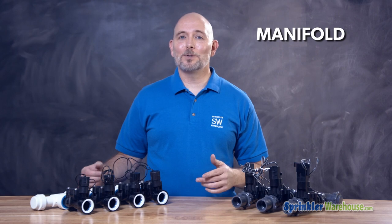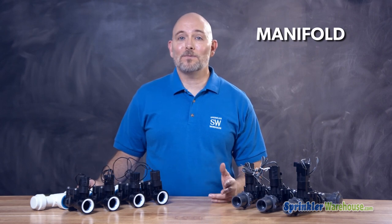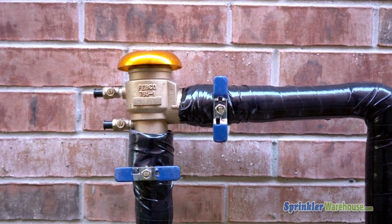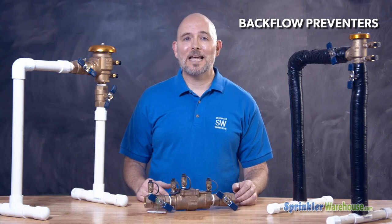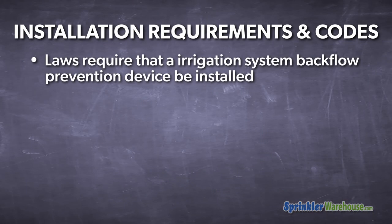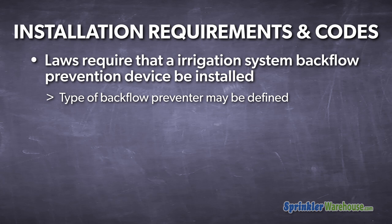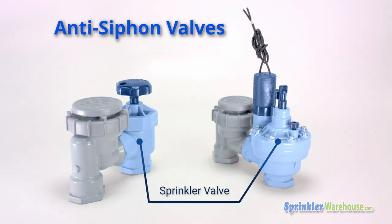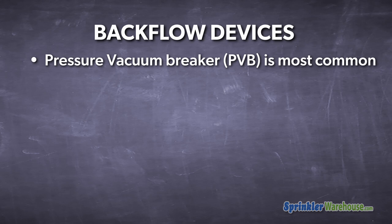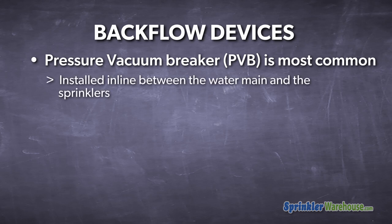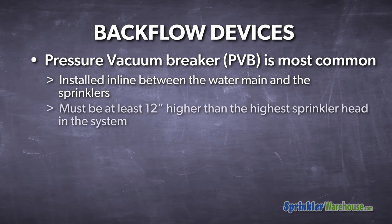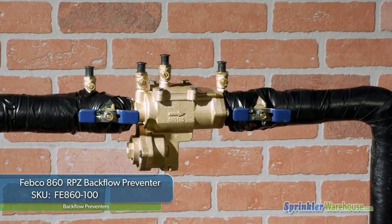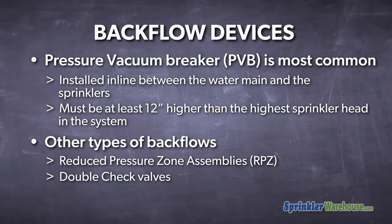Valves are often grouped together in a manifold. By grouping valves, it increases the ease of maintenance and often reduces the cost of piping. Backflow preventers — often just called backflows — are devices used to prevent back siphonage or back pressure from contaminating drinking water. Most water districts require some type of backflow prevention device in an irrigation system. Laws and regulations in your area may require a specific type of backflow and specify where it can be installed. The most common type in residential areas is a pressure vacuum breaker, which must be installed in line between the water main and the irrigation system, at least 12 inches higher than the highest sprinkler head. Other types include reduced pressure zone assemblies and double check valves.